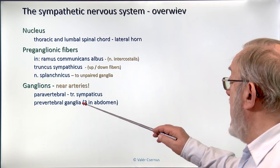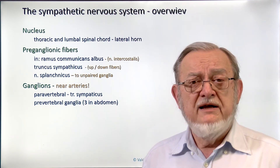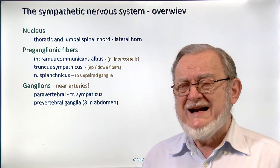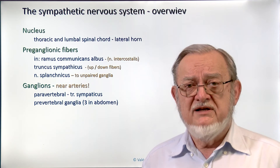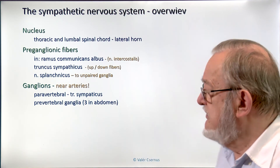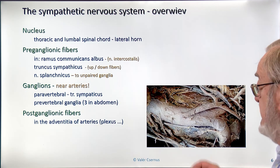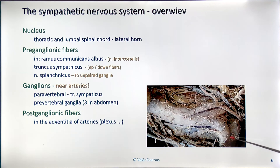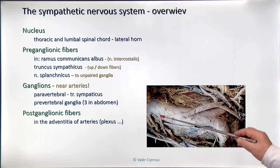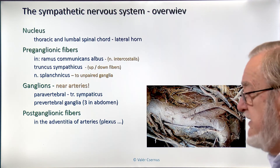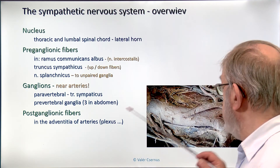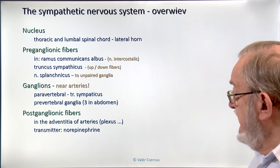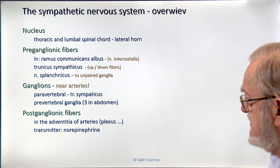The pre-vertebral ganglia — the unpaired ones at the midline of the abdomen — are around the origin of the three unpaired visceral branches of the abdominal aorta: the celiac, superior mesenteric, and inferior mesenteric arteries, and the ganglia have the same names. The post-ganglionic fibers always run in the adventitia of the arteries; if you see such a preparation all those fibers are sympathetic post-ganglionic fibers in the wall of the abdominal aorta. If you prepare the arteries removing only fat while leaving the nerve fibers, you see a similar picture. The transmitter of post-ganglionic fibers is norepinephrine, specific to the sympathetic system.